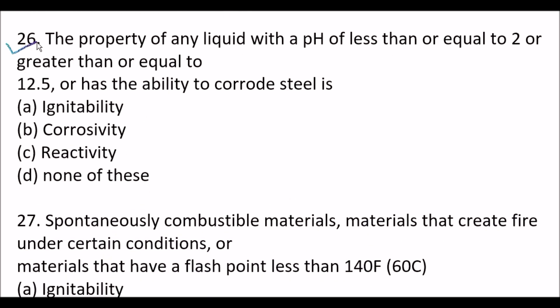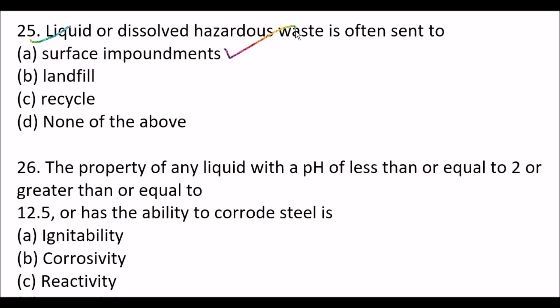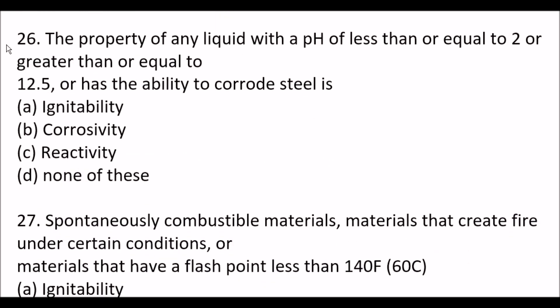Next question: The property of any liquid with a pH value of less than or equal to 2, or greater than or equal to 12.5, or that has the ability to corrode steel - Option A - ignitability, Option B - corrosivity, Option C - reactivity, Option D - none of these. The right answer is Option B - corrosivity.